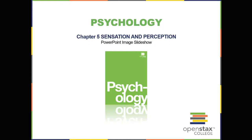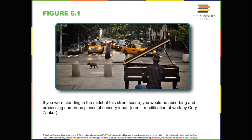Chapter 5: Sensation and Perception. Imagine standing on a city street corner. You might be struck by movement everywhere as cars and people go about their business, by the sound of a street musician's melody or a horn honking in the distance, by the smell of exhaust fumes or of food being sold by a nearby vendor, and by the sensation of hard pavement under your feet.